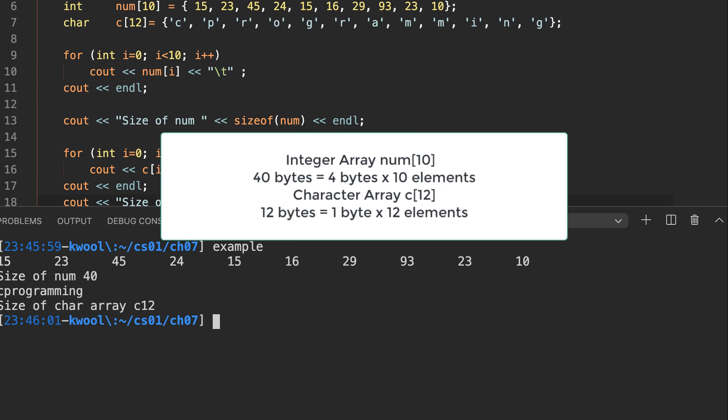Because the integer array has 10 elements and each element requires 4 bytes because of integer, and then the character array has 12 elements and character requires 1 byte, so the character array has 12 bytes.